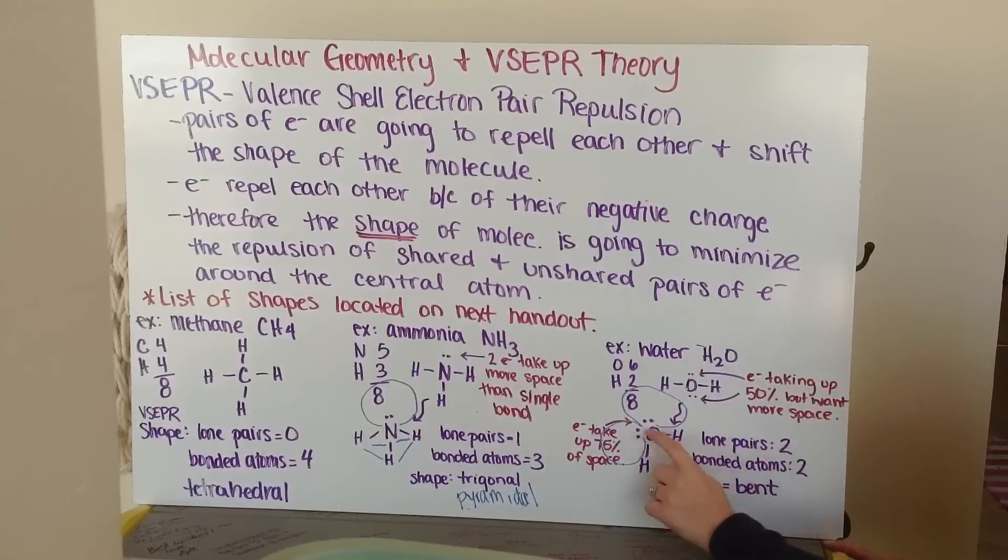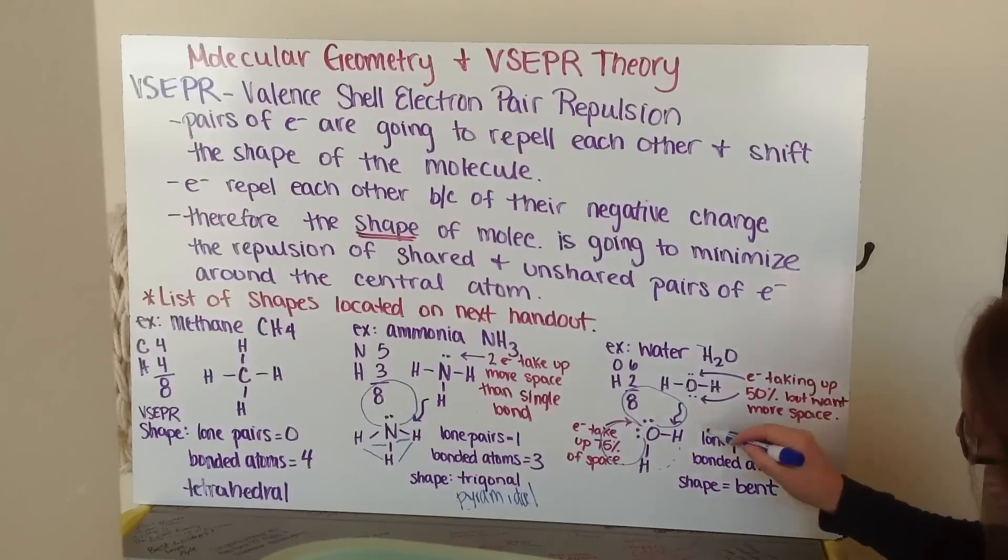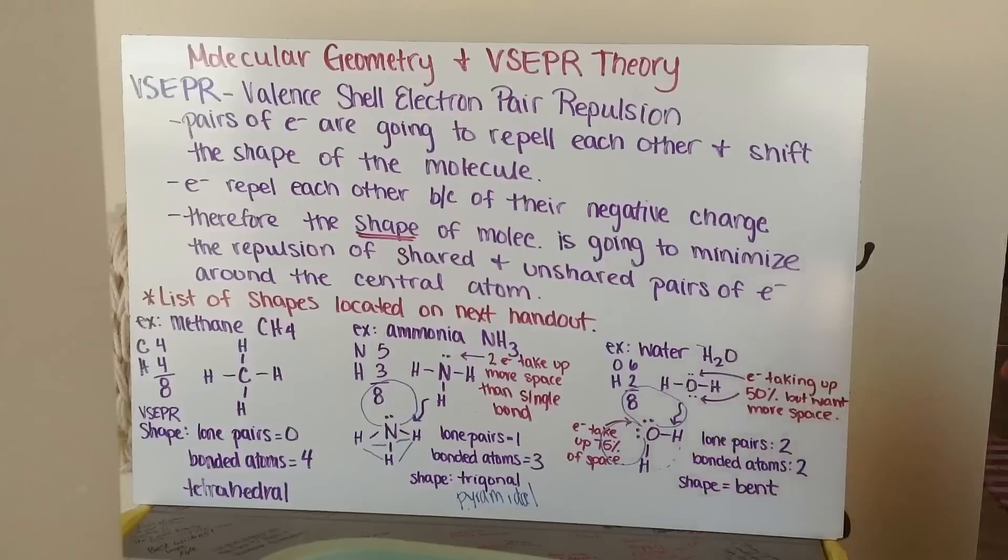With two lone pairs of electrons here and here and two bonded atoms—my two hydrogens to the central atom—this is called a bent shape because this really is bent at almost a 90-degree angle.